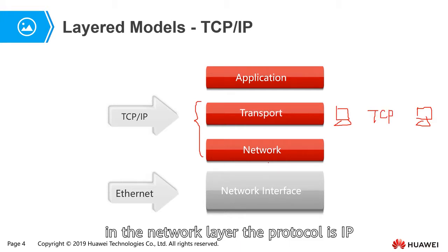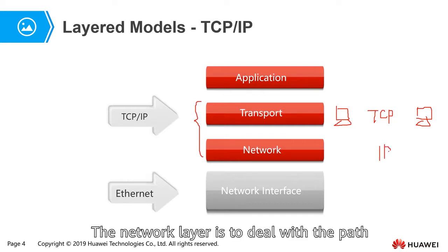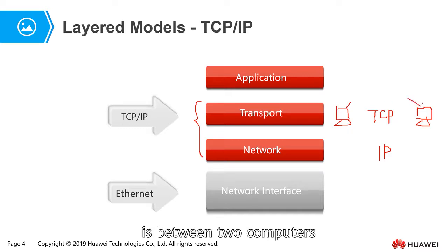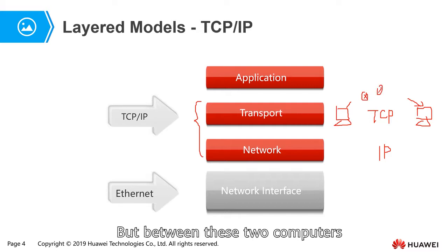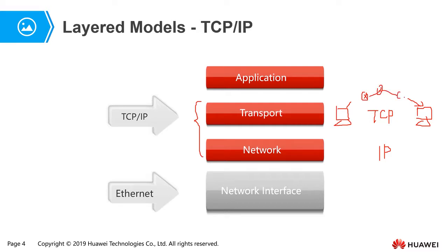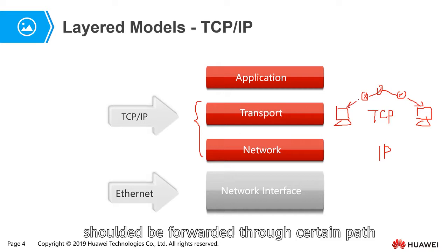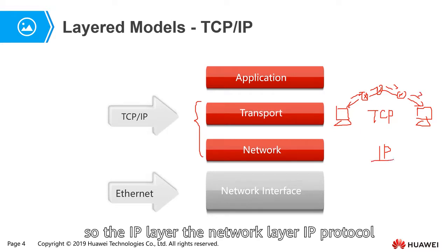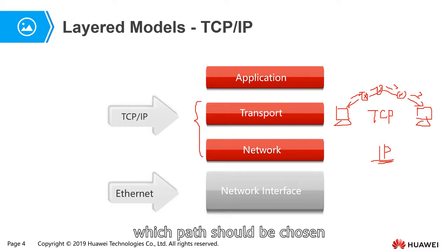The network layer protocol is IP. The network layer deals with path selection — the communication is between two computers, but between these two computers there is a network, so the packet should follow certain paths to reach the destination. The IP protocol at the network layer decides which path should be chosen.